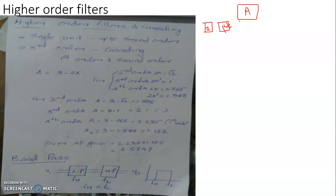To construct a third order filter, a first order filter is cascaded with a second order filter. A fourth order filter uses two cascaded second order filters, and a fifth order filter can be made by cascading a fourth order filter with a first order filter. Cascading is therefore the most suitable method for constructing higher order filters, generally combining first order and second order filter units.